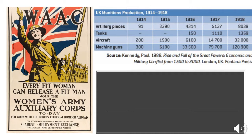Women were also in uniform in the later stages of the war. They joined the Army and the Navy as non-combatants, taking over clerical roles and support staff in the armed forces. The Women's Army Auxiliary Corps was begun in 1917, and women were sent to the battlefields as cooks, nurses, and doctors. Over 57,000 women served.